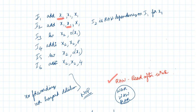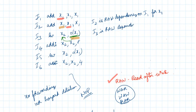Now look at the third instruction. The content from memory location 0x1 should be loaded into the x2 register. So we are reading x1 after writing x1 in instruction I2. Therefore, I3 is a read-after-write dependency on I2 for register x1.